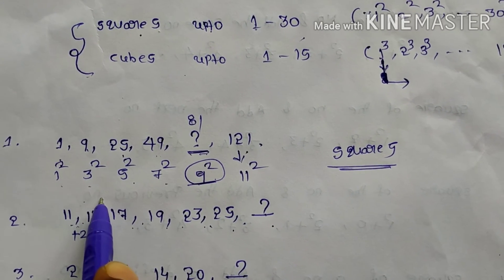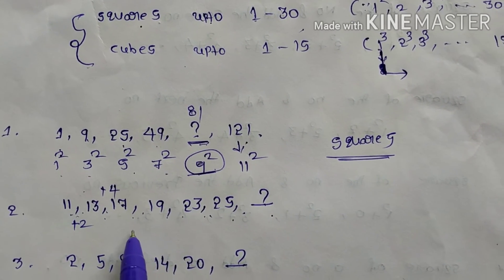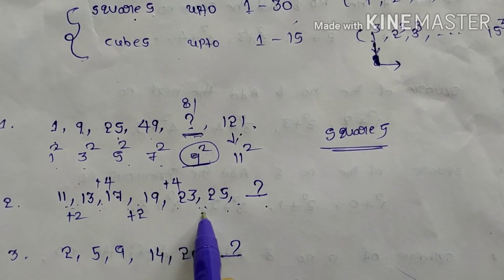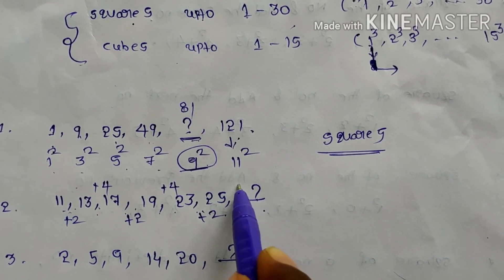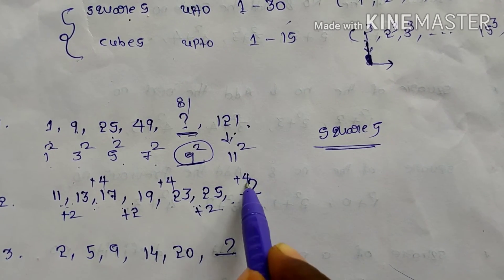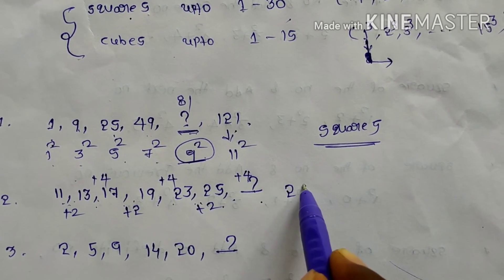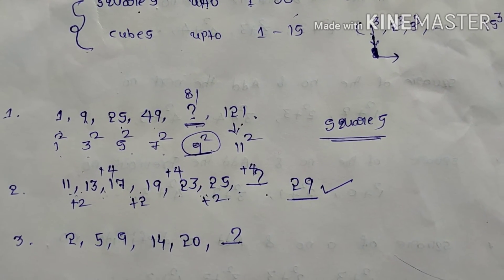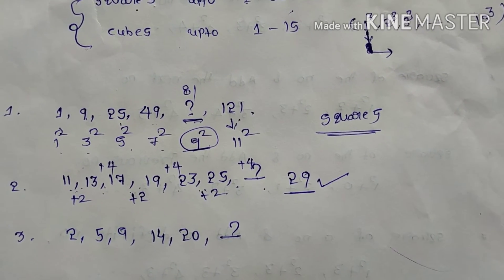How much here? 11 plus 2, 13. Next, 13 plus 4, 17. 17 plus 2, 19. 19 plus 4, 23. Plus 2. That means plus 2, plus 4, plus 2, plus 4, plus 2. Next will be plus 4. 25 plus 4 will be 29 only.